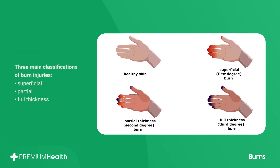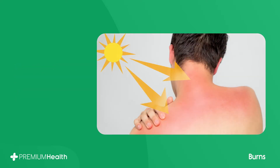There are three main classifications of burn injuries: superficial, partial, and full thickness burns. A superficial burn is where only the top layer of the skin is involved, such as sunburn. This usually heals well and should not require medical attention unless it covers more than 10% of the body.